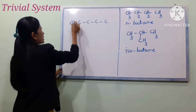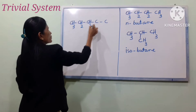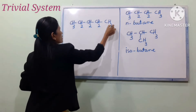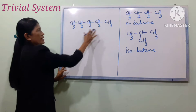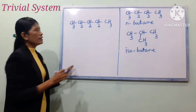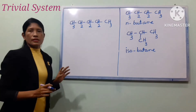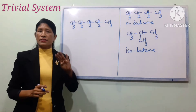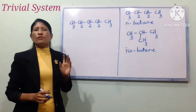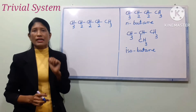Hydrogen chains: CH3, CH2, CH2, CH2, CH3. Hydrogen: CH3, CH2, CH3. Hydrogen: CH3 to CH3.